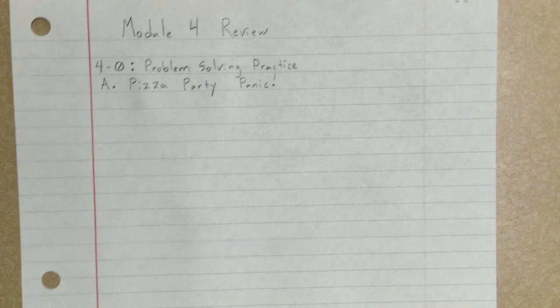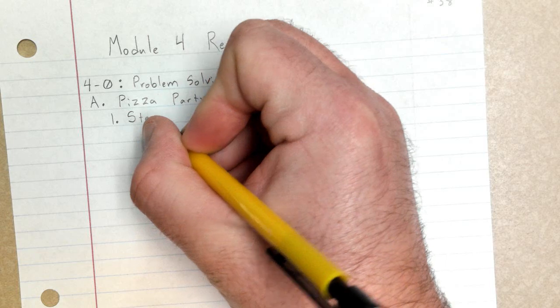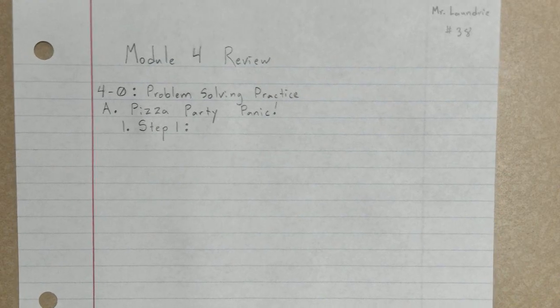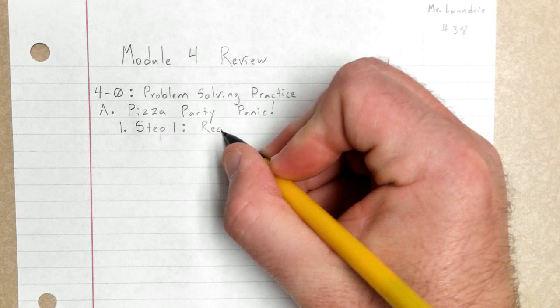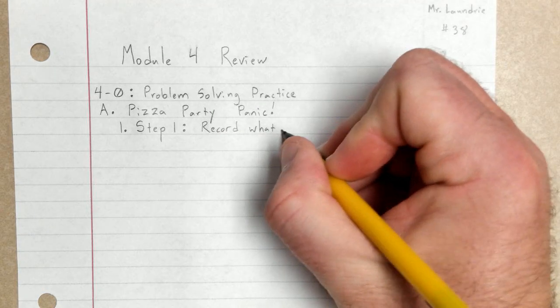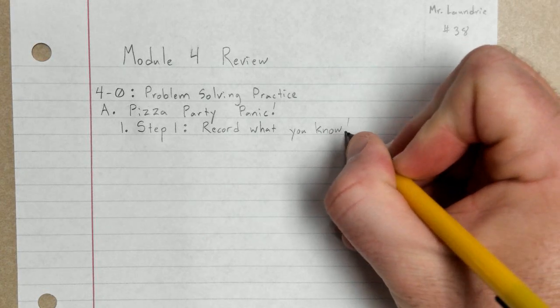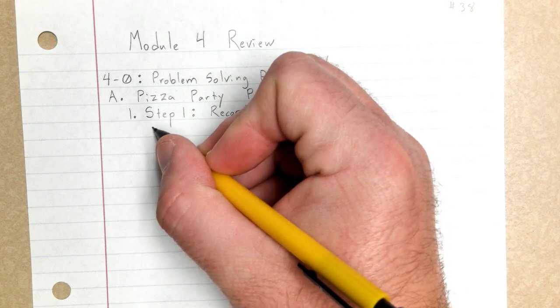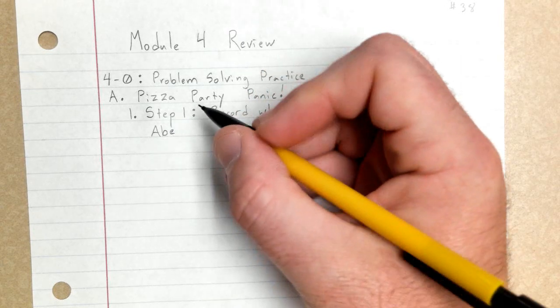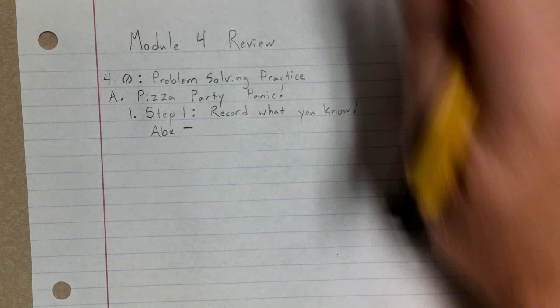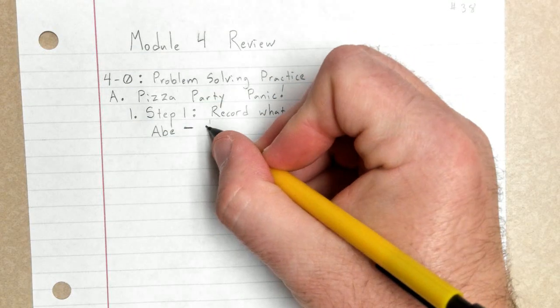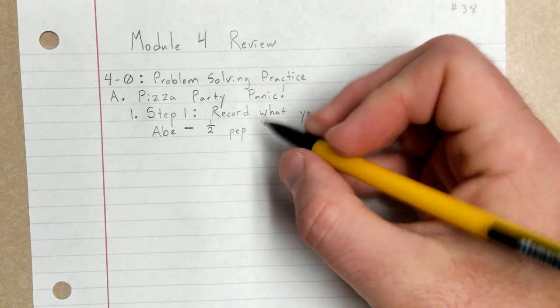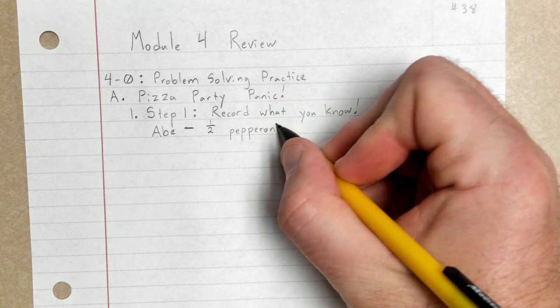There's a lot going on here, so we need to break this up piece by piece. What I'm going to suggest for step one is record what you know. Let's start by just writing down what we know. Abe wants one half a pizza, specifically half a pepperoni pizza.